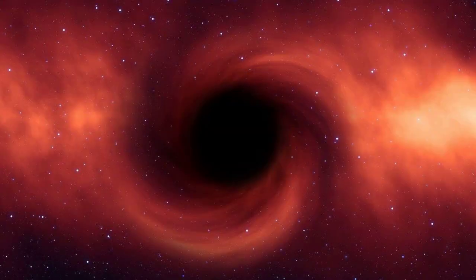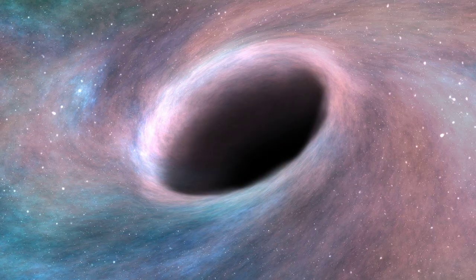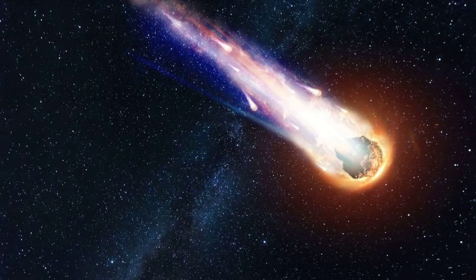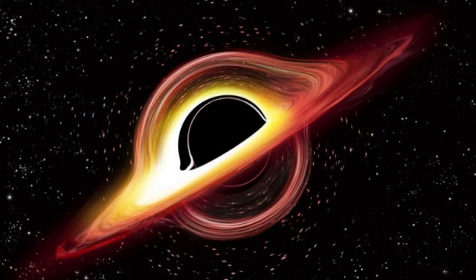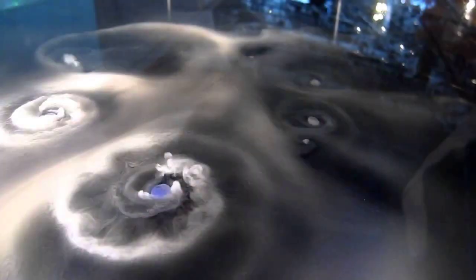If a wandering black hole were headed toward our solar system, it would first reach the Oort Cloud. That's the sphere of icy objects surrounding the solar system, two light years away from us. As soon as a black hole came too close, the icy bodies in this region would be ejected from their orbits.